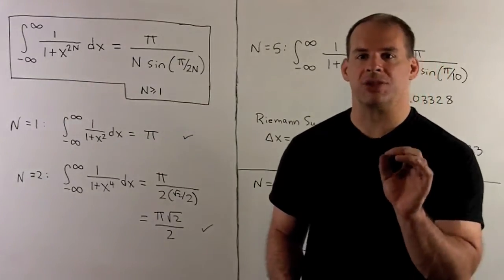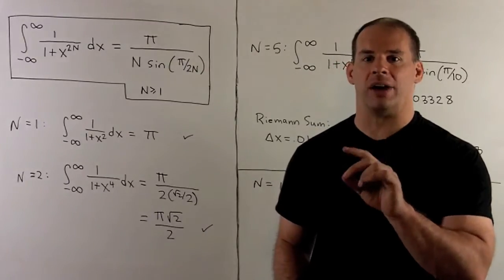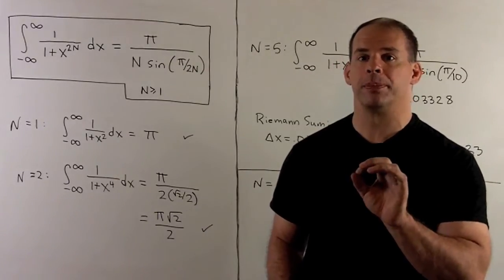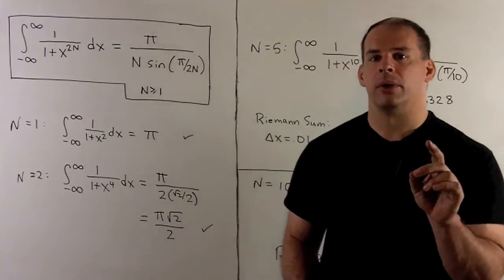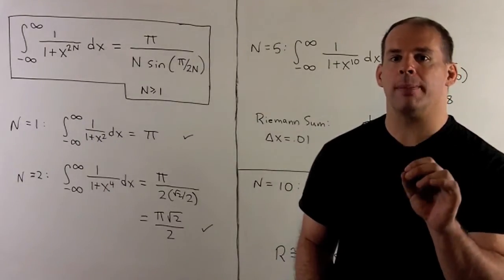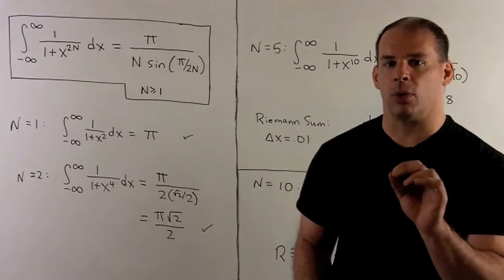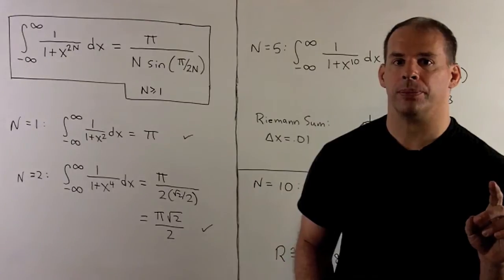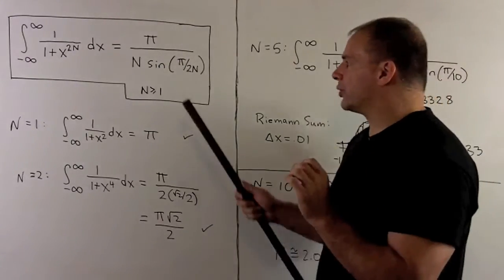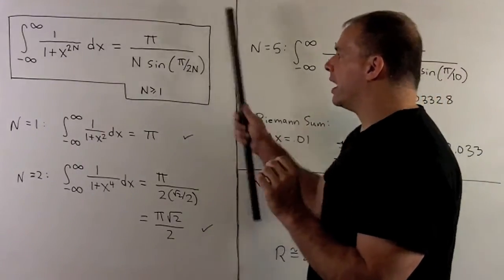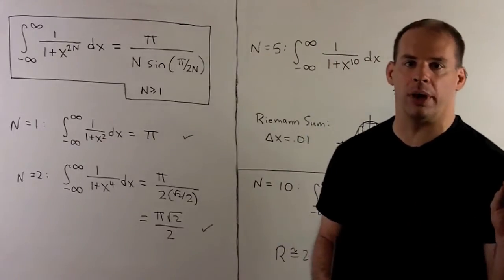Our technique is going to be exactly the same — we're going to use a line integral in the complex plane. The things we'll need to add: we're going to use a geometric sum, and I'm going to need the Euler formula for sine. The answer that comes out is very nice, so we should definitely check this on a few points.